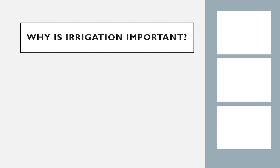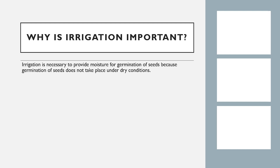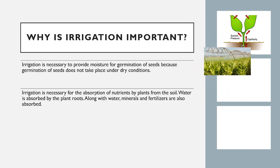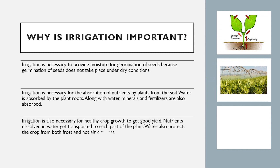Have you ever wondered why irrigation is important? Irrigation is necessary to provide moisture for germination of seeds, because germination does not take place under dry conditions. It is also necessary for the absorption of nutrients by plants from the soil. Water is absorbed by the plant roots, and along with water, minerals and fertilizers are also absorbed. Irrigation is necessary for healthy crop growth to get good yield, as nutrients dissolved in water get transported to each part of the plant.